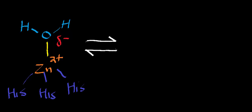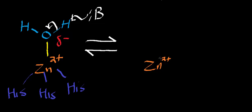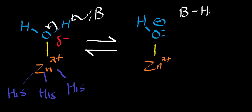There is a base in the active site that deprotonates the water, forcing the electrons onto the oxygen. So we still have the Zn2+ coordinated by the three histidines, and now we have hydroxide bound to the zinc. The base abstracted the proton and is now in its conjugate acid form, while the hydroxide remains coordinated.